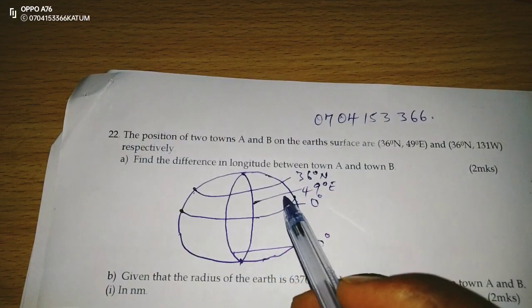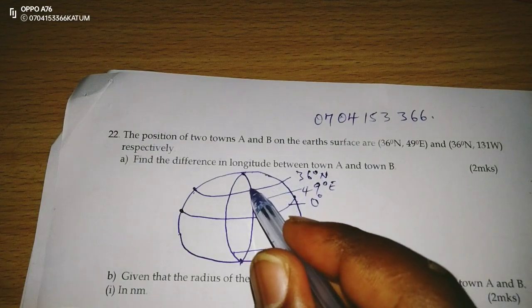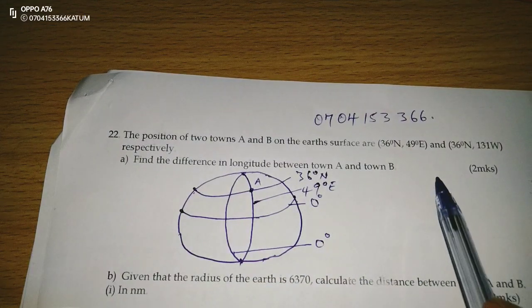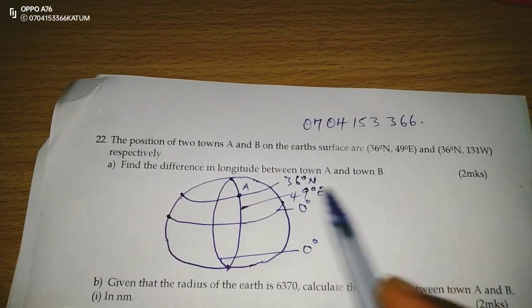So the intersection of 49 east and 36 north gives us town A. Then again, we will have 131 in the west.